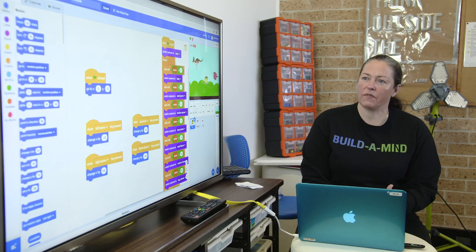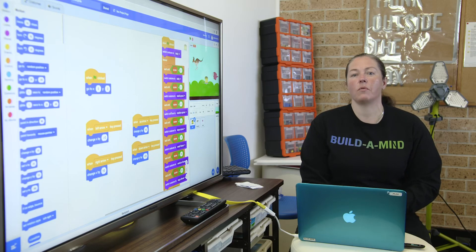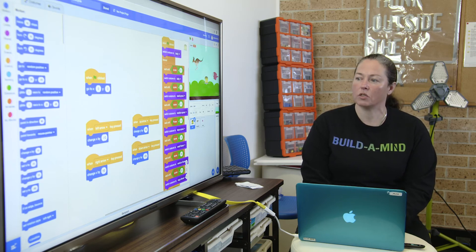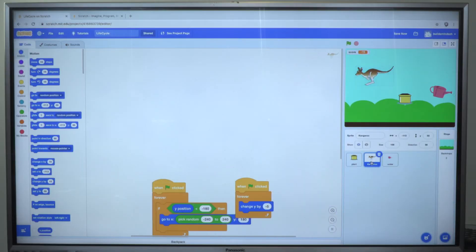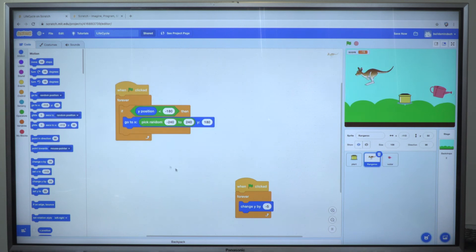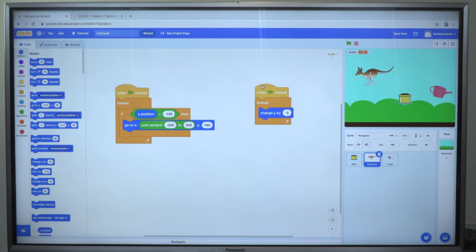Each character is given its own instructions, much like I would tell one person a specific set of instructions and another person a different set of instructions. So our kangaroo, if I click on my kangaroo, he has his own set of instructions.